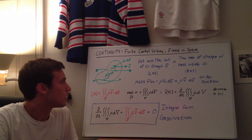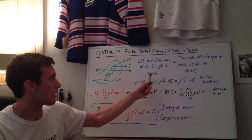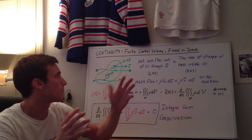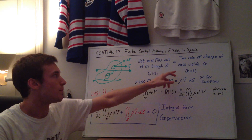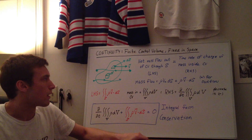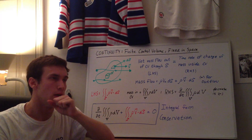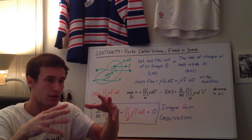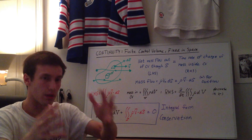What the conservation of mass equation is physically saying is that the net mass flow out of the control volume through the surface — the left-hand side — is equal to the time rate of change of the mass inside the control volume, which is the right-hand side. If you think of the balloon, the left-hand side is whatever's flowing through the balloon's surface, and the right-hand side is how much the mass is changing inside the balloon.